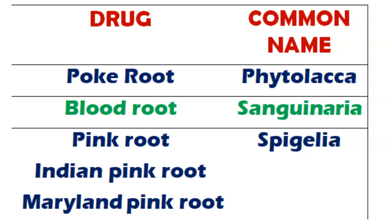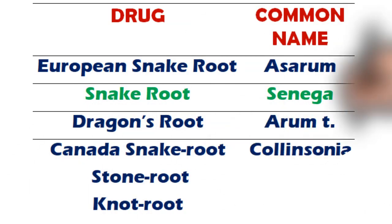Poke root is the common name of Phytolacca. Blood root is the common name of Sanguinaria. Pink root, Indian pink root, or Maryland pink root are the common names of Spigelia. European snake root is the common name of Asarum europaeum. Snake root is the common name of Senega. Dragon's root is the common name of Arum triphyllum.